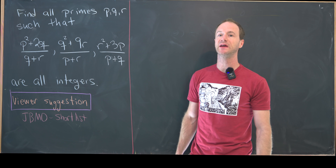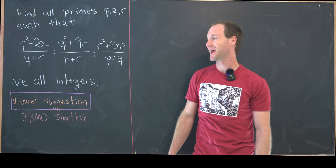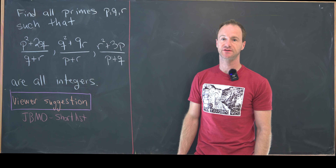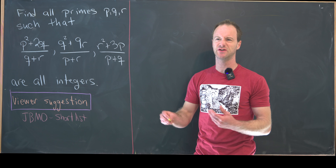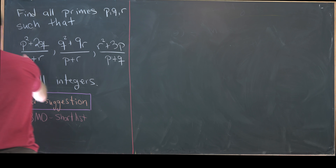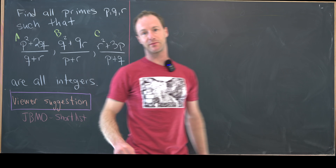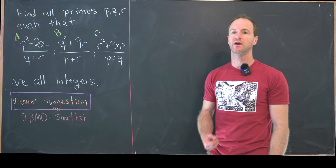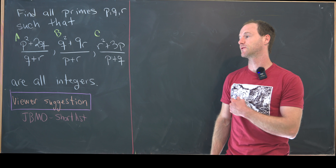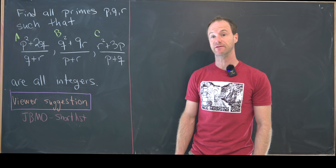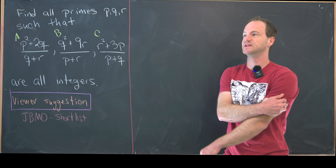We've got two big conditions: first, these three are all prime numbers, and second, each of these rational expressions are integers. I'm going to give these expressions names so I can talk about them easily. I'll call the first one capital A, the second one capital B, and the third one capital C. When working on problems involving prime numbers, it's important to determine if any of these primes can be even — the only even prime is 2.